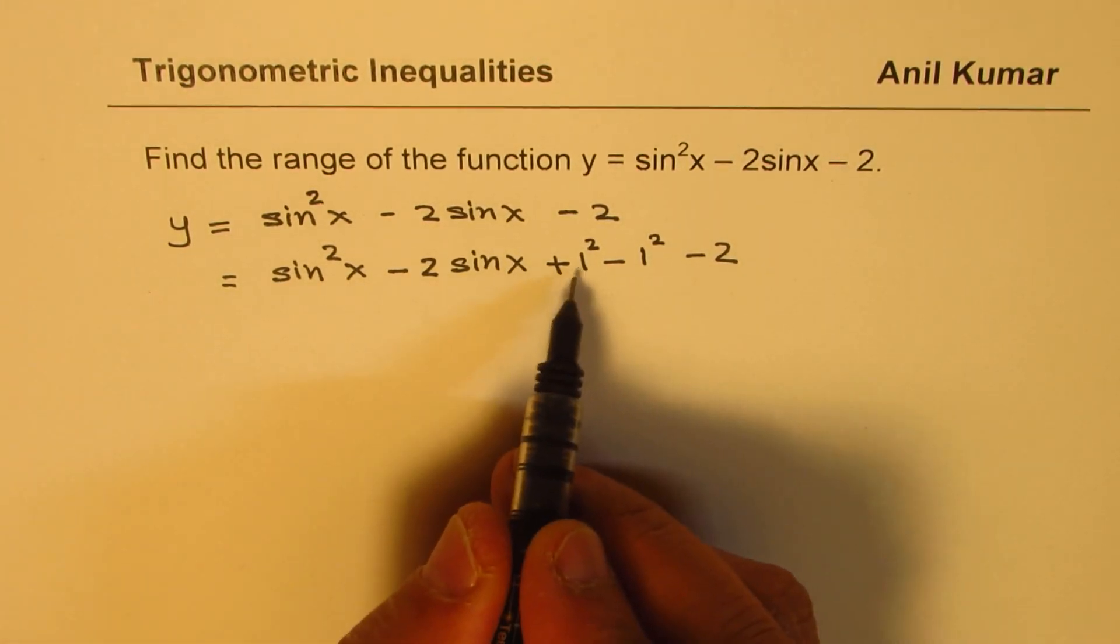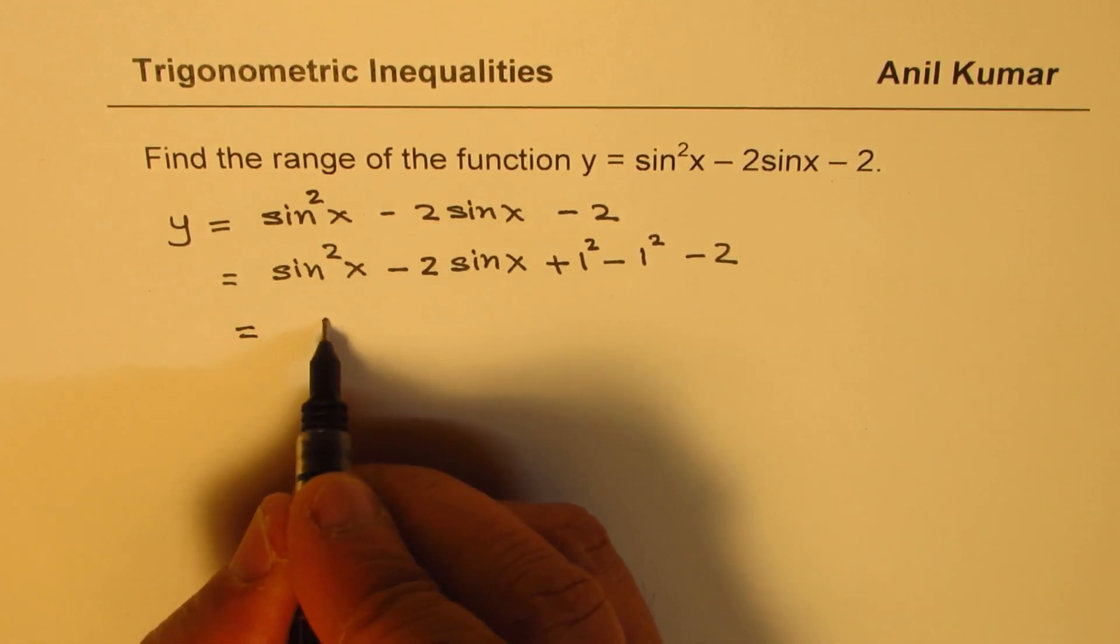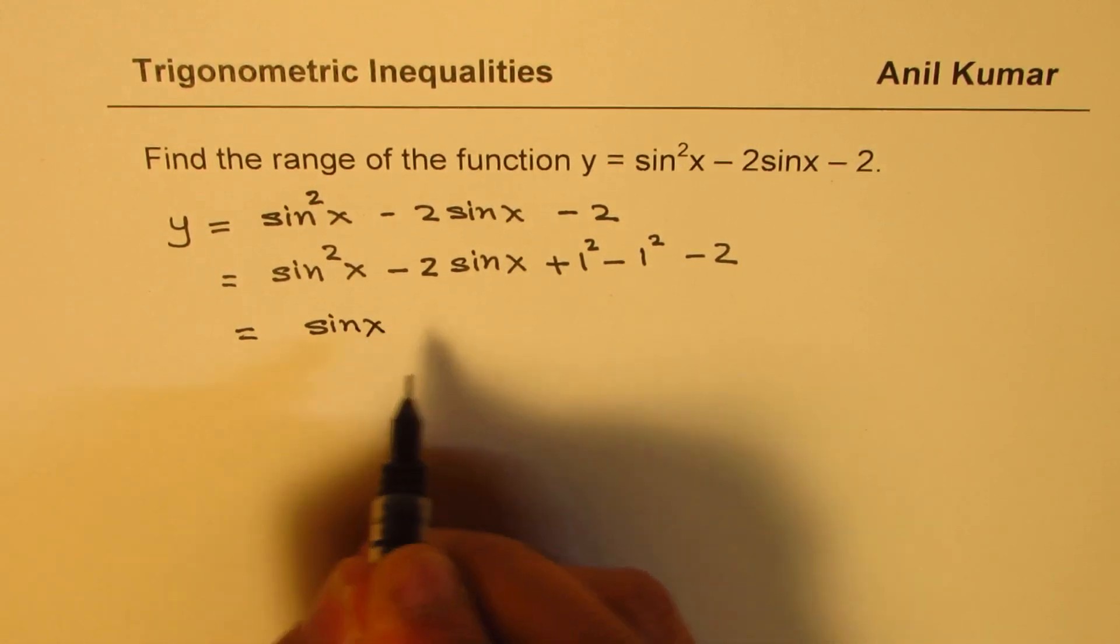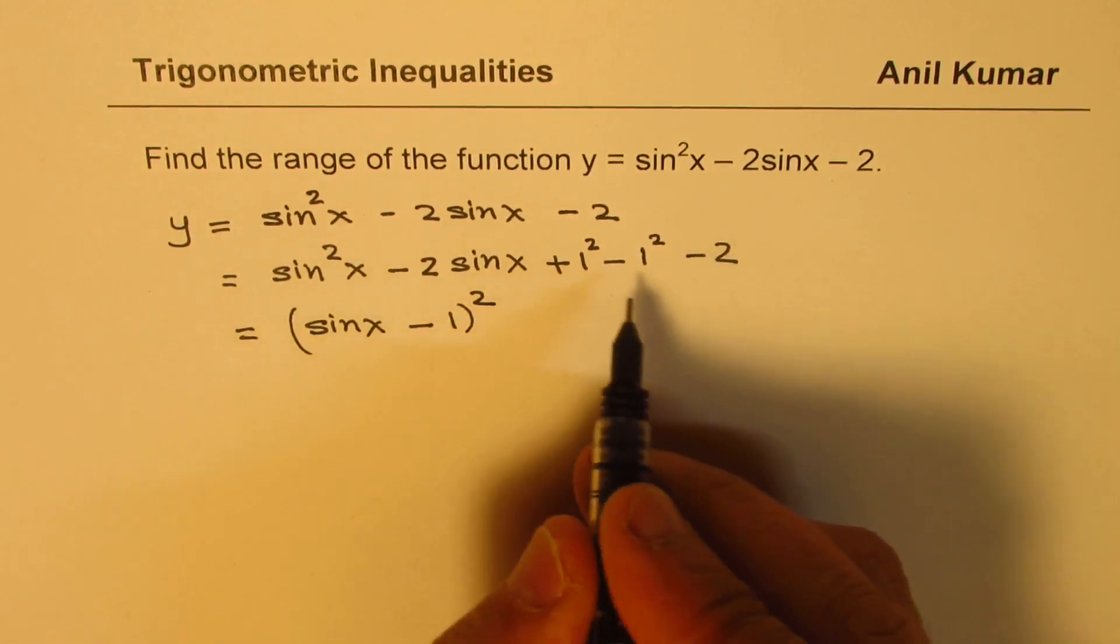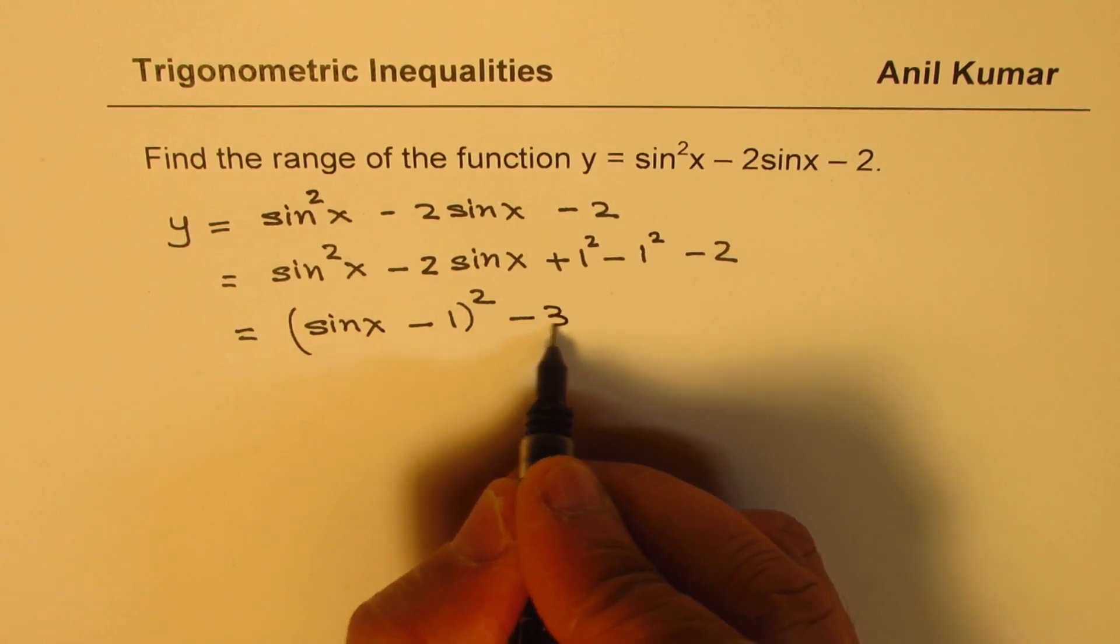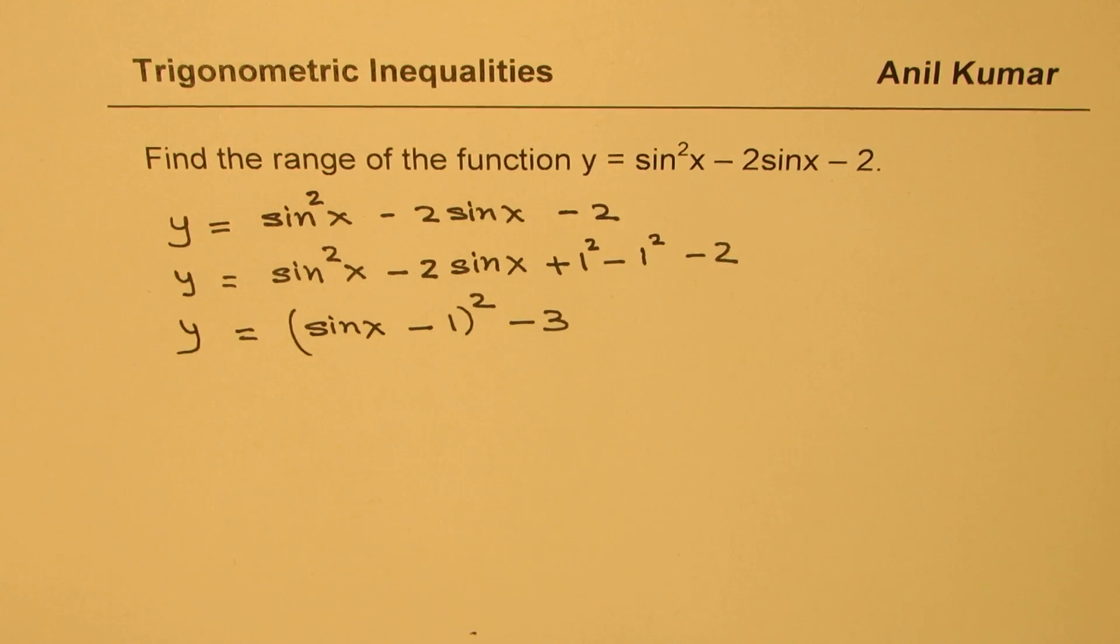Now this becomes a perfect square and I could now write this as sine x minus 1 whole square. And minus 1 minus 2 gives me minus 3. So I get the value of y as equal to sine x minus 1 whole square minus 3. Do you see that? Now that is the completing the squares thing.